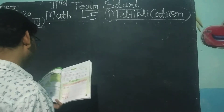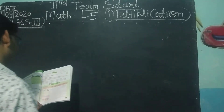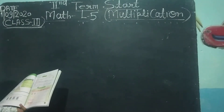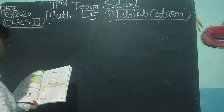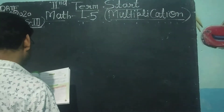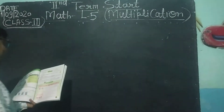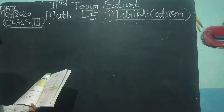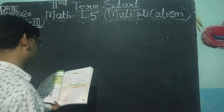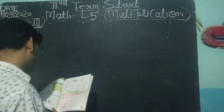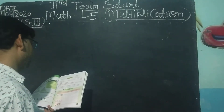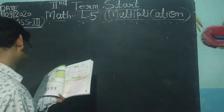Multiplication is a repeated addition. The number that is repeated is called multiplication.